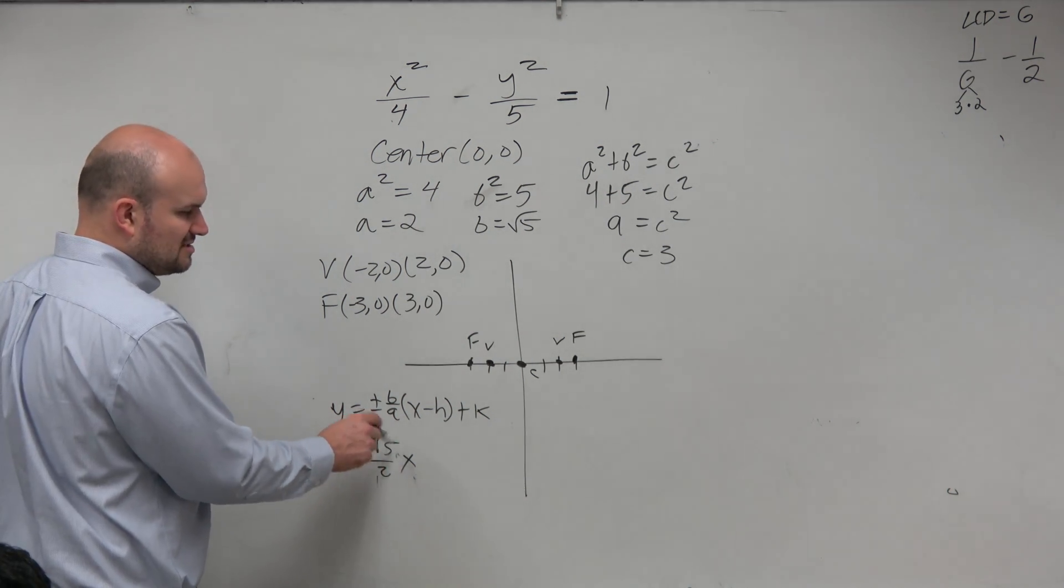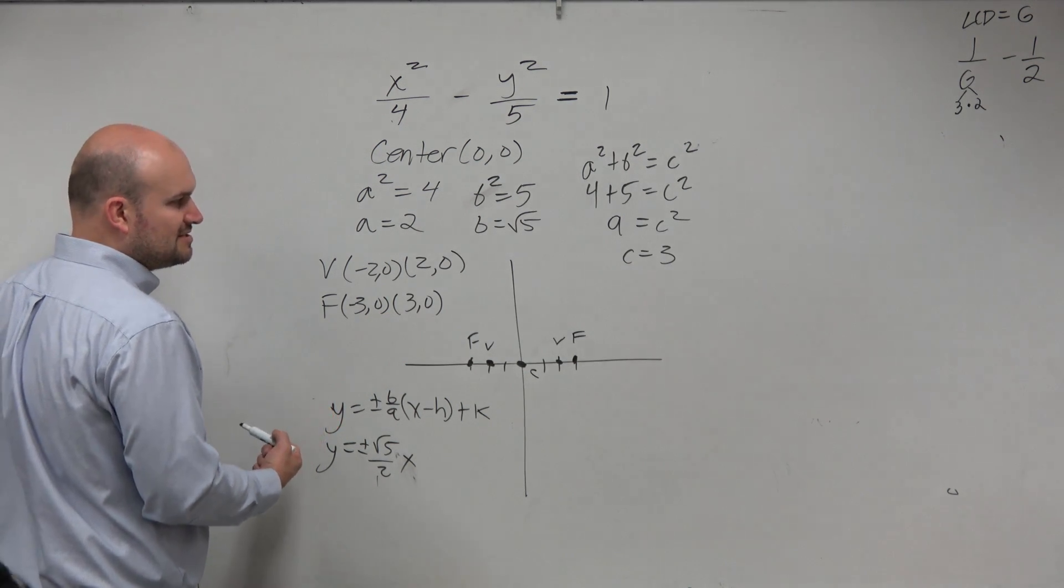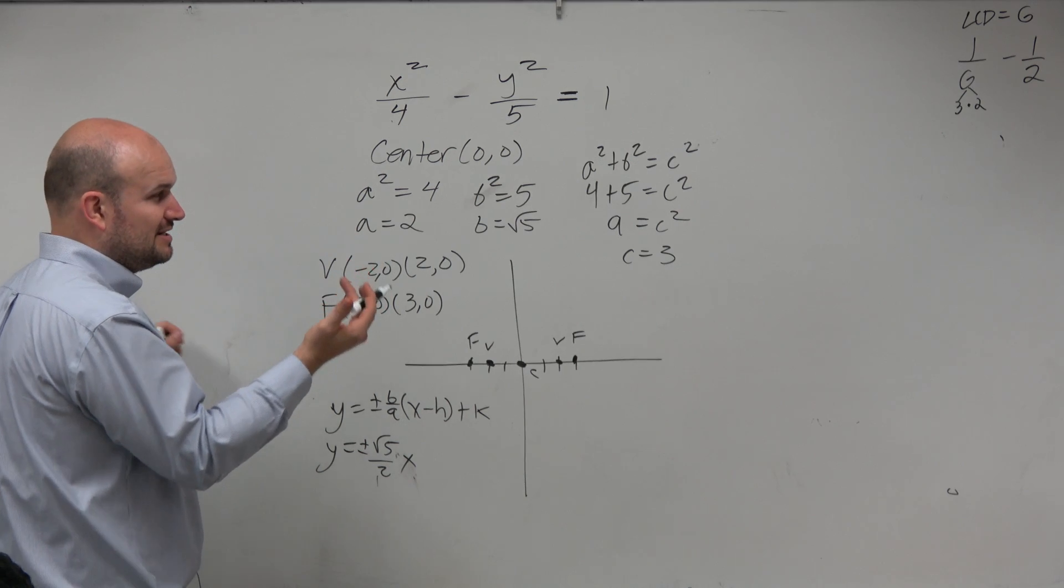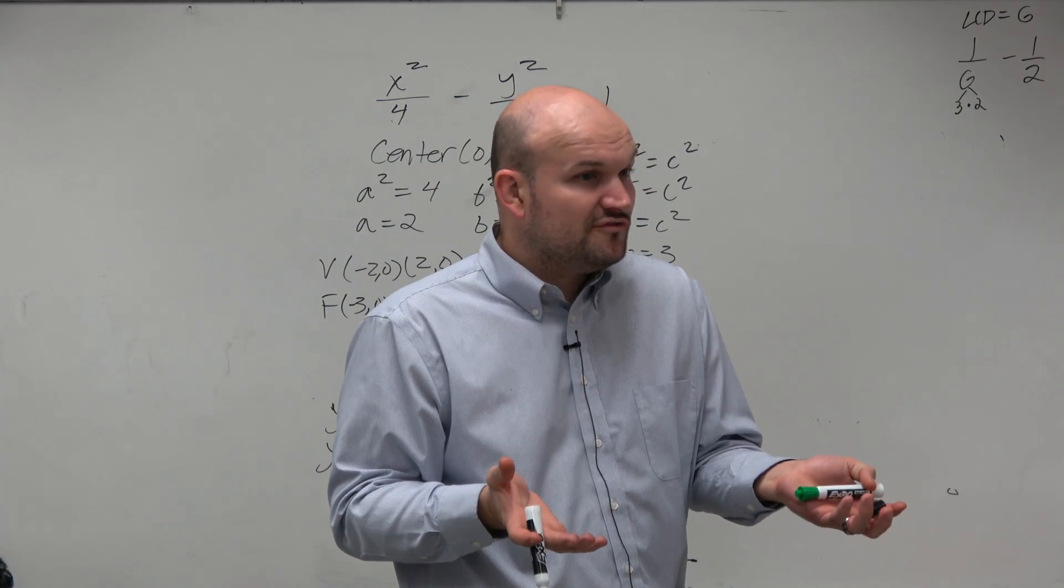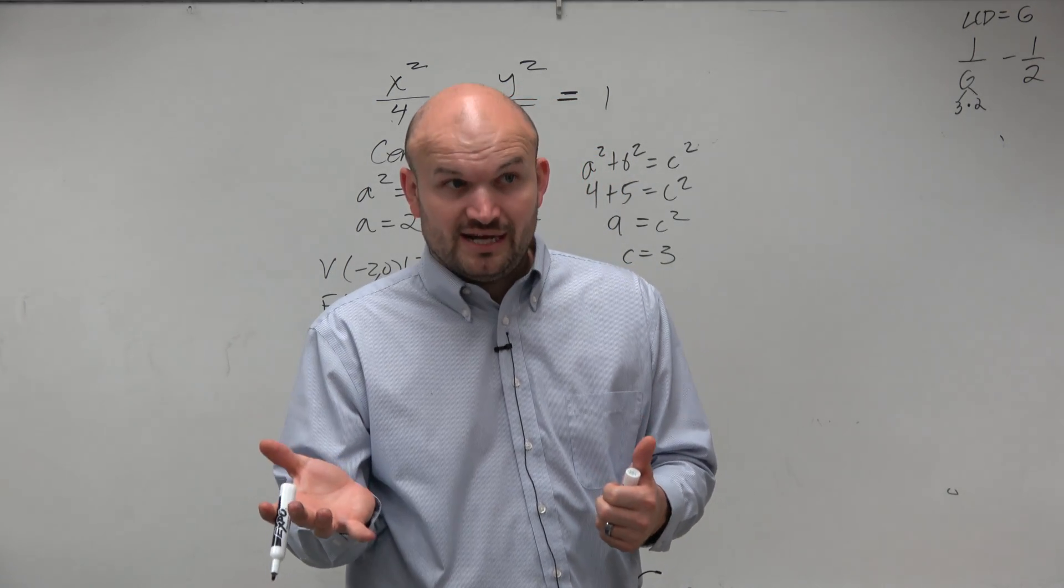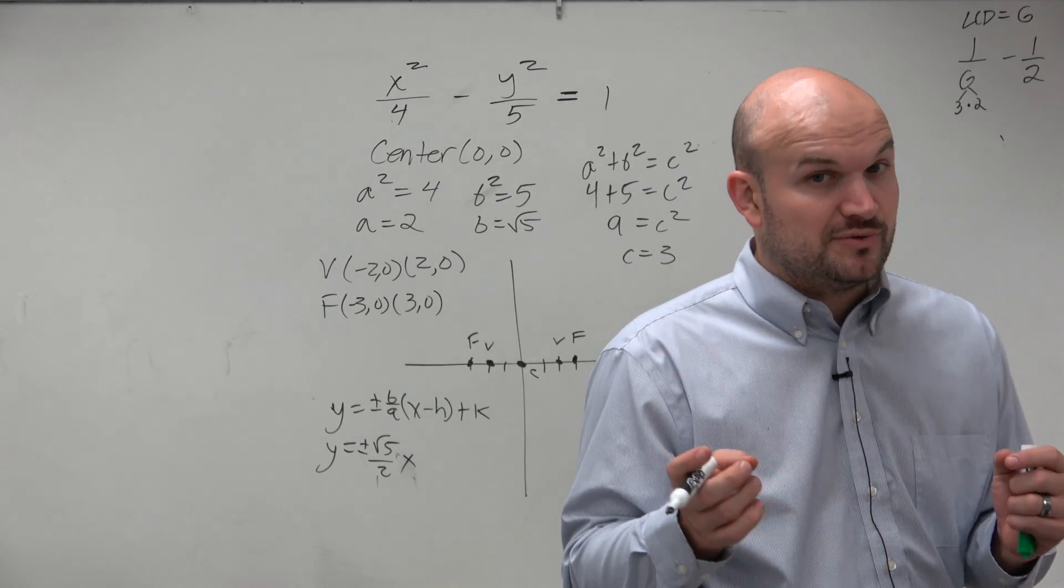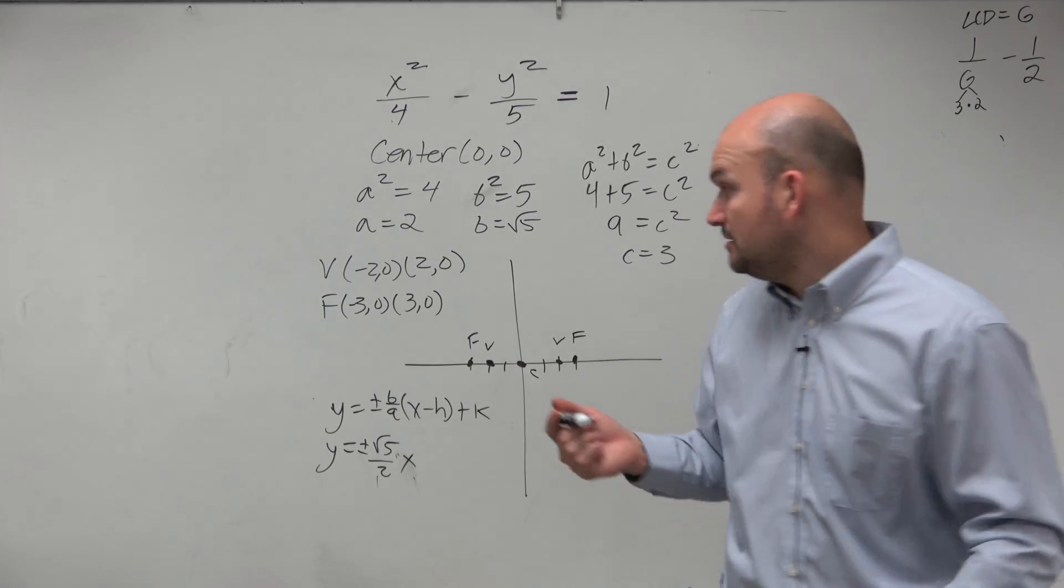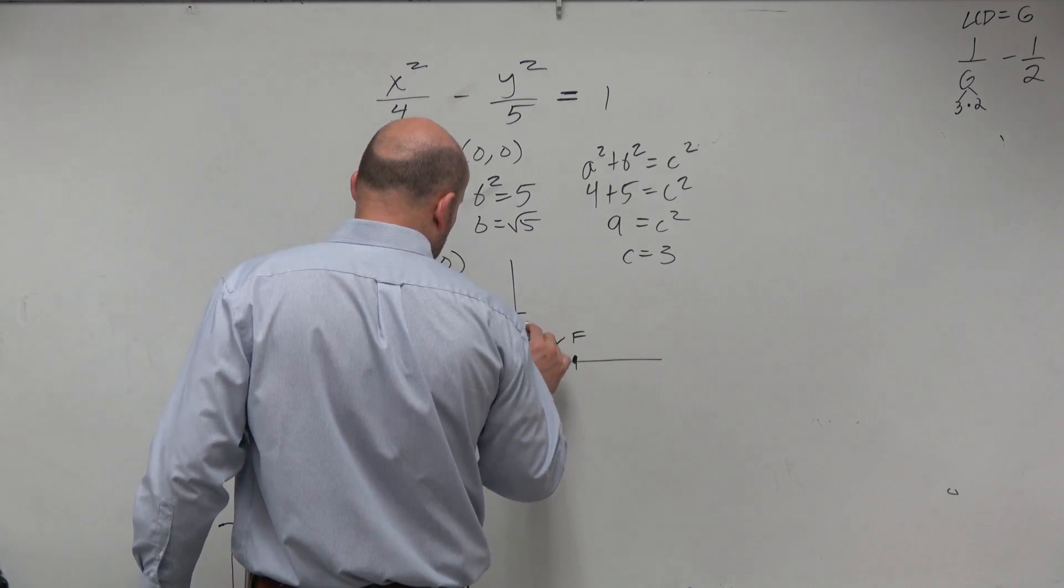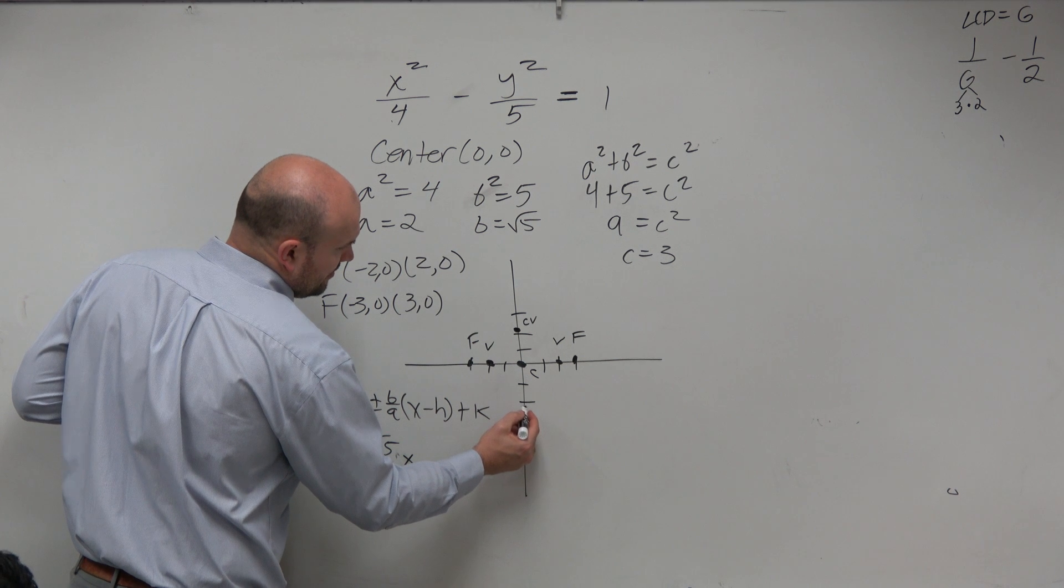But rather than trying to find the slope and sketch it, one thing we can do is find the co-vertices, which is the square root of 5. Now you might say, I have no idea what square root of 5 is. Well, that's OK, because you know the square root of 4, which is 2, and you know the square root of 9, which is 3. So therefore, you can probably make the assumption that the square root of 5 is somewhere between 2 and 3. Would that make sense, right? So why don't we just go up to, so our co-vertices is probably somewhere like there, and probably somewhere like there.